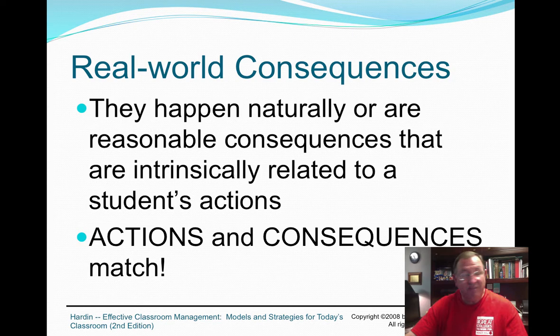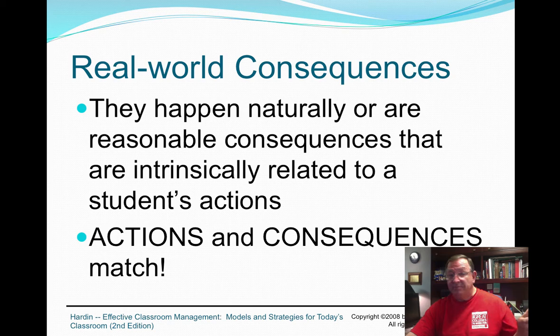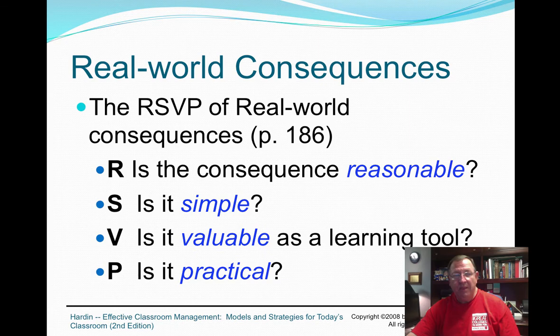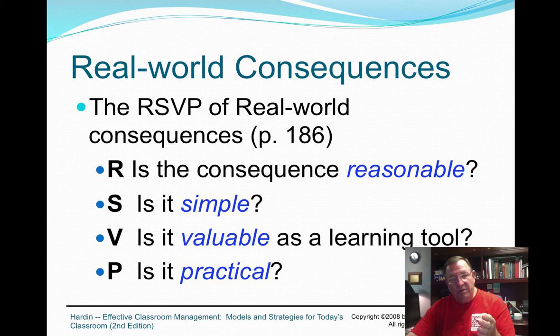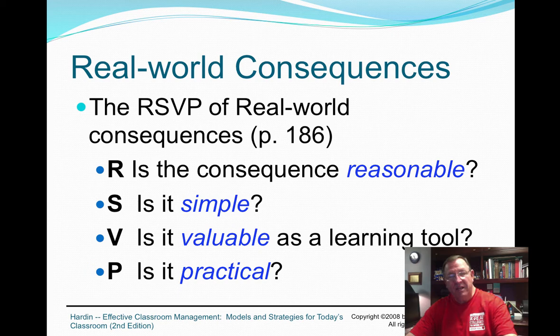If the offense is mild, make the consequence mild — unless it's the 15th time, in which case you should have stepped it up earlier. Coloroso provides the acronym RSVP to evaluate consequences: Is it Reasonable? Is it Simple? Is it Valuable to the student as a learning tool? Is it Practical for me to implement? If the consequence fits the RSVP criteria, don't spend time worrying about it — execute it, let it happen.